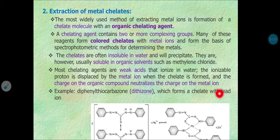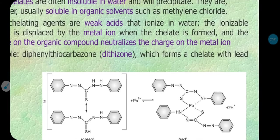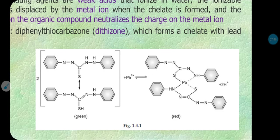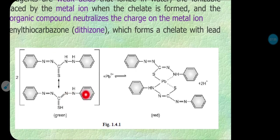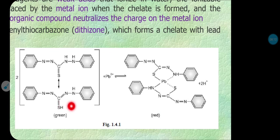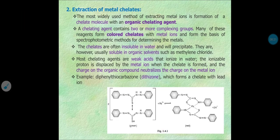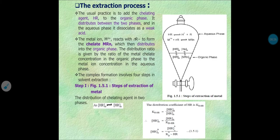An example is dithizone, diphenylthiocarbazone, which forms a chelate with lead ions. Dithizone is a green-colored chelating reagent. When added to a metal ion solution, it forms a chelate with lead ions that is red in color — the color change from green to red indicates formation of the metal-lead chelate. This describes the extraction process of metal ions through chelate formation. In the next lecture, we will see the actual extraction process and the factors affecting it.